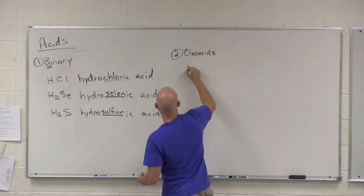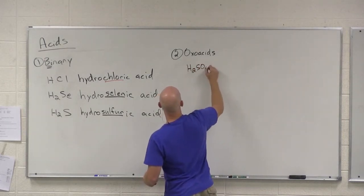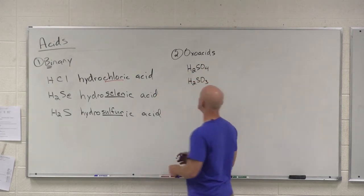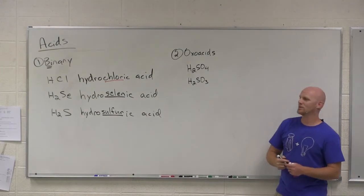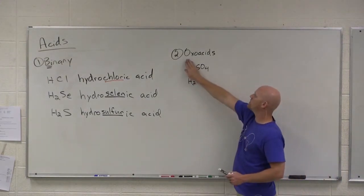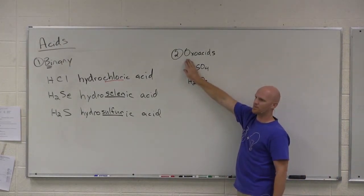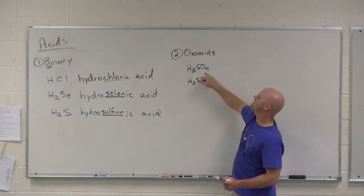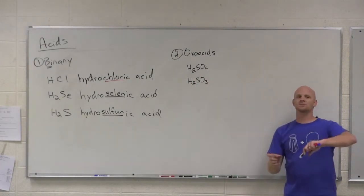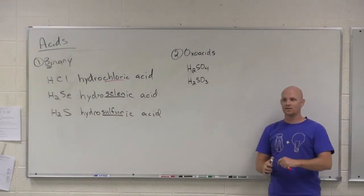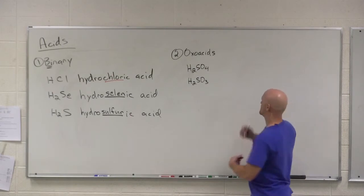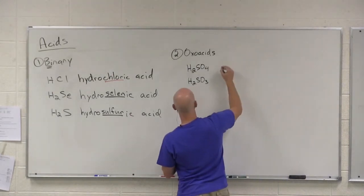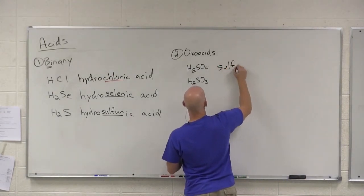We already dealt with one of these in another context. We didn't actually name it. But for sulfur, there are two oxoacids. If you look, SO4 2- minus, what is that called? What polyatomic ion was that again? Sulfate. When you're naming the corresponding oxoacid, -ate turns into -ic. Like you ate something disgusting and said ick. And so this is, instead of sulfate, it's sulfuric acid.